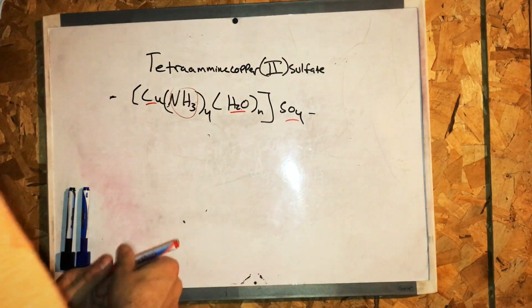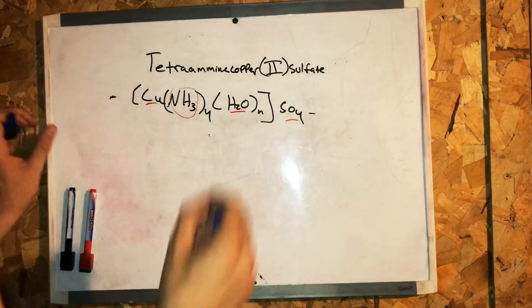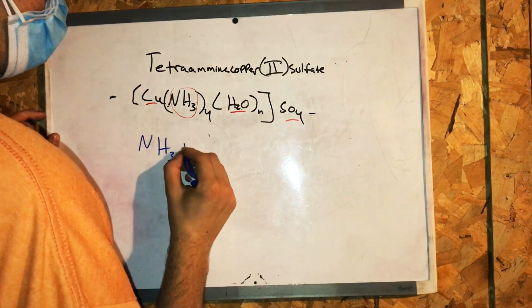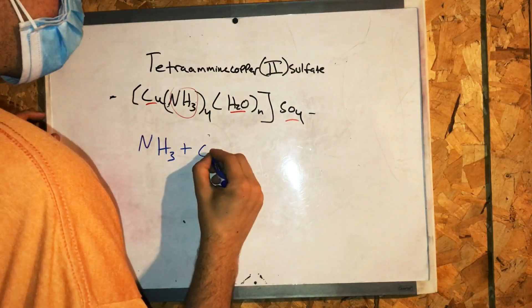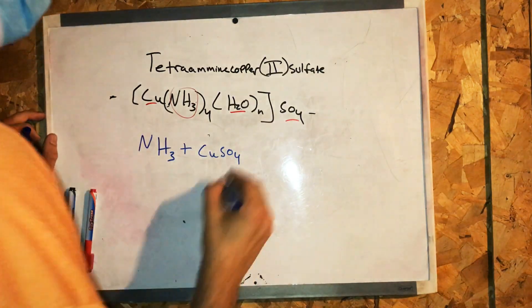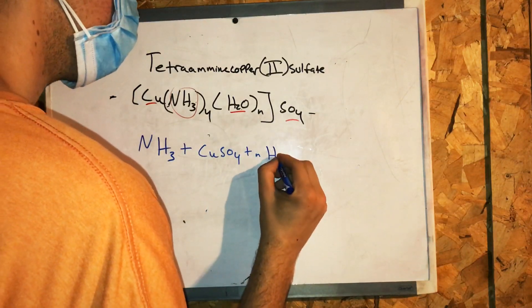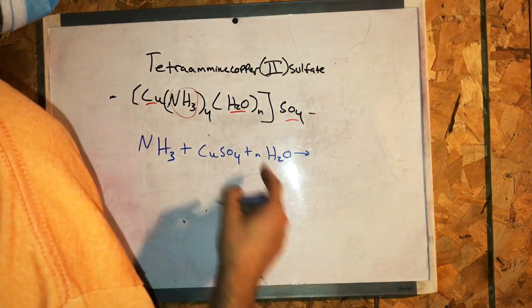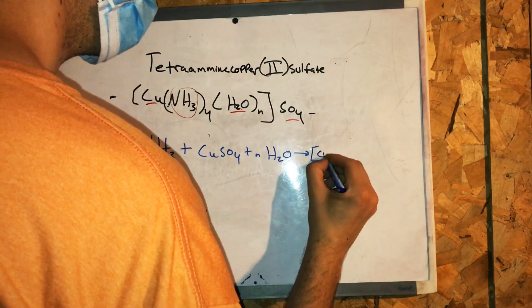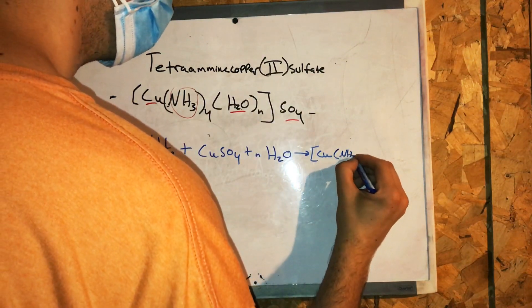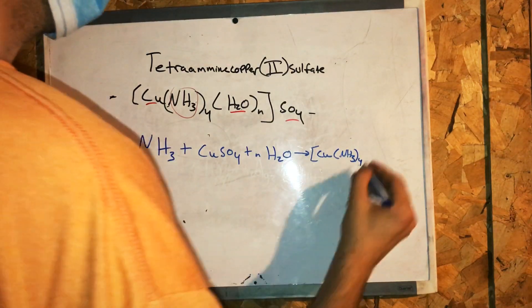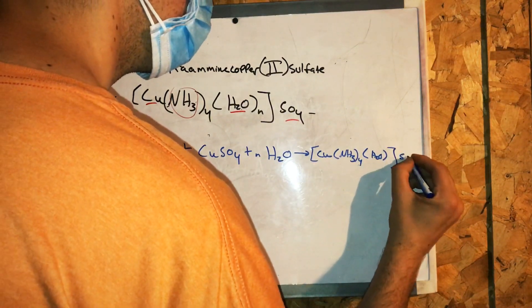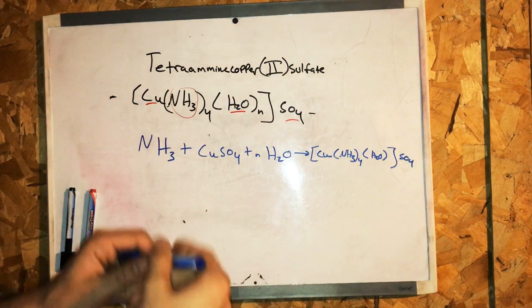Now let's write this out chemically. What's going to happen in the lab is I'm going to take ammonia and it's added to some copper sulfate, and there's water present too with all of this. This is going to yield Cu, copper, NH3, that's ammonia, H2O, that's water, followed with sulfate.